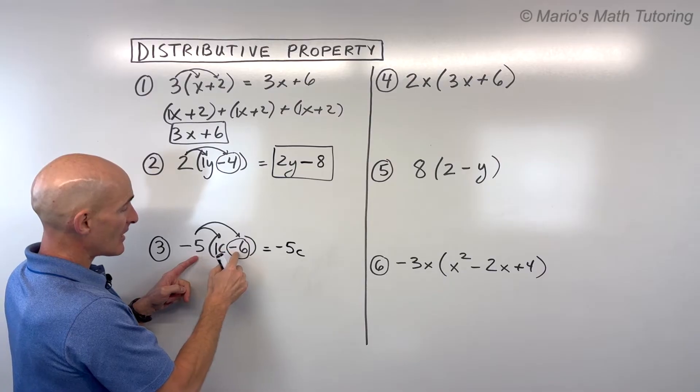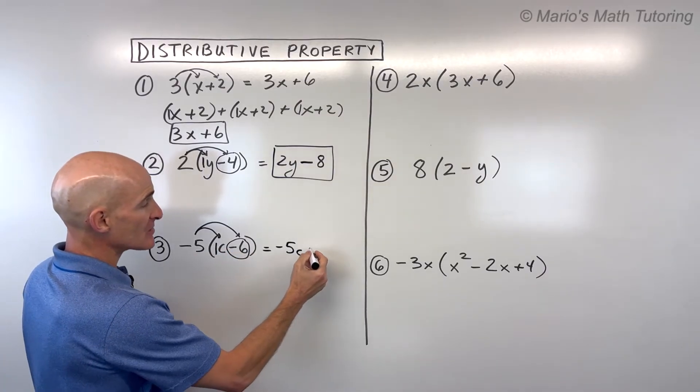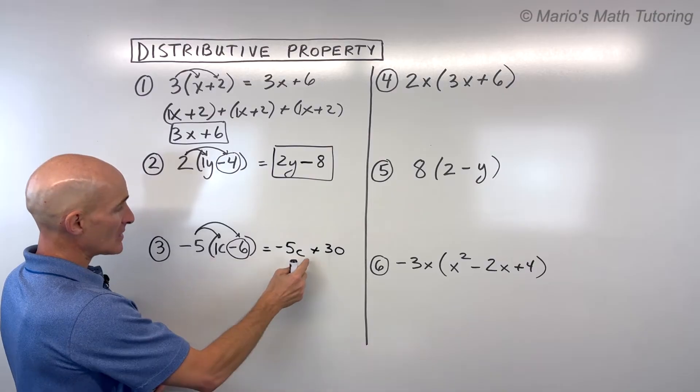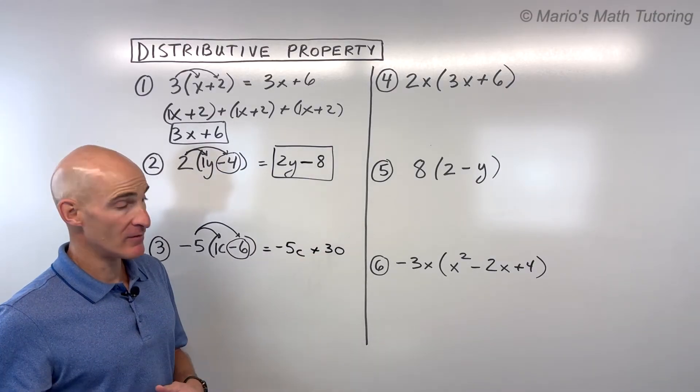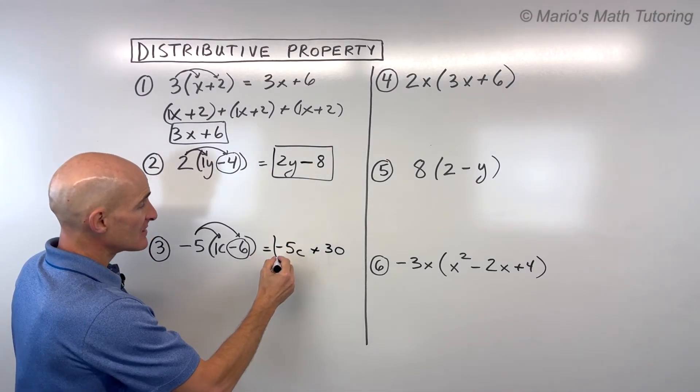So negative five times one c is negative 5c. And negative five times a negative six is a positive 30. Remember, a negative times a negative is a positive. And so we can just write that plus for positive. So that's the key.